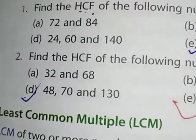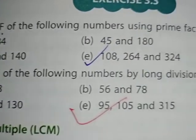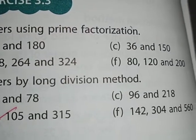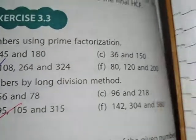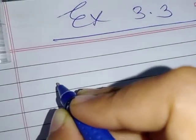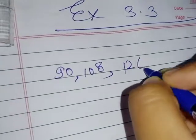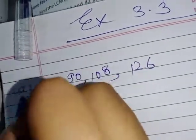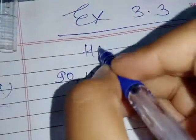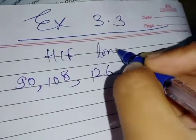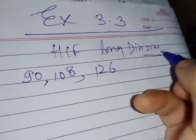So, first of all, I'll tell you the method. If we need to find HCF by long division, then how to do? Suppose we are given with the numbers that is 90, 108 and 126. These are the numbers and we have to find the HCF by long division method.